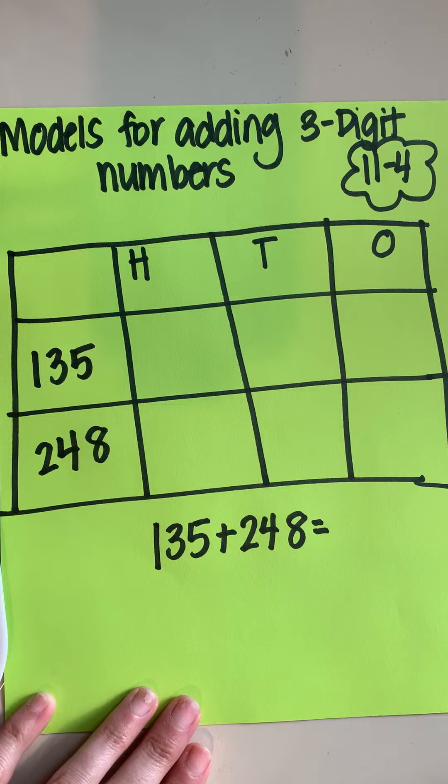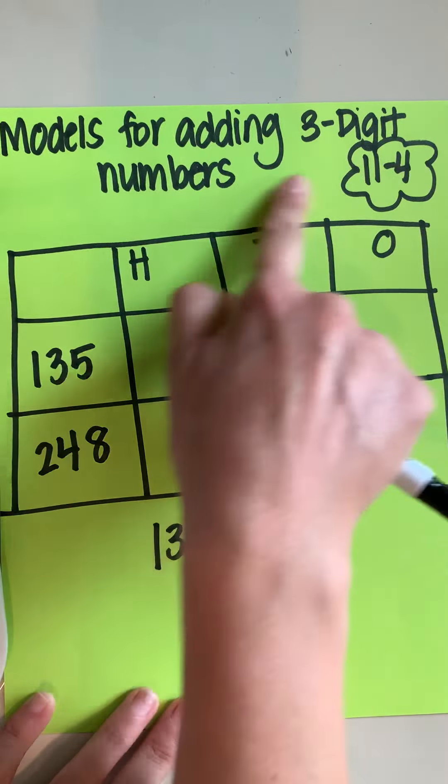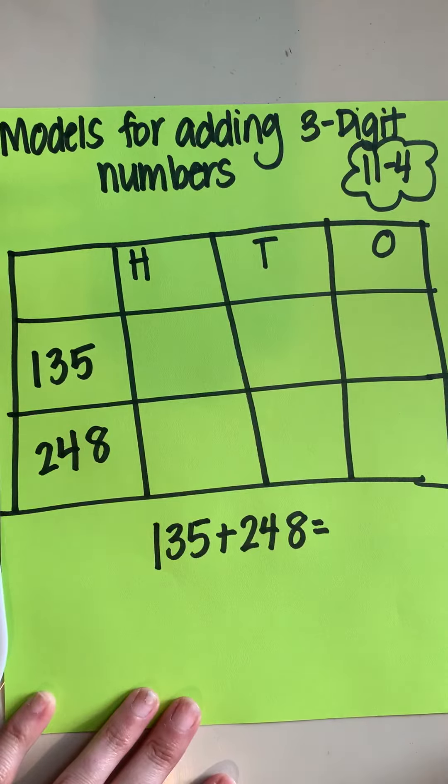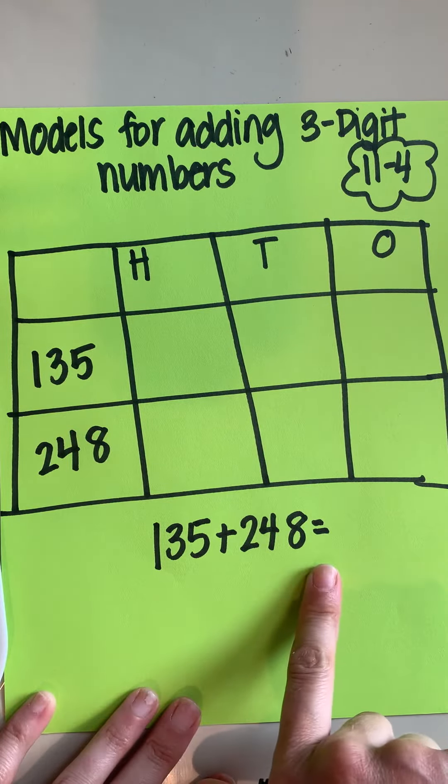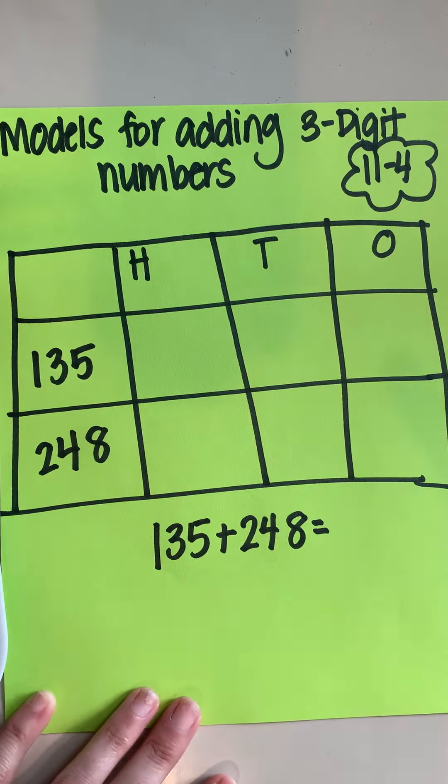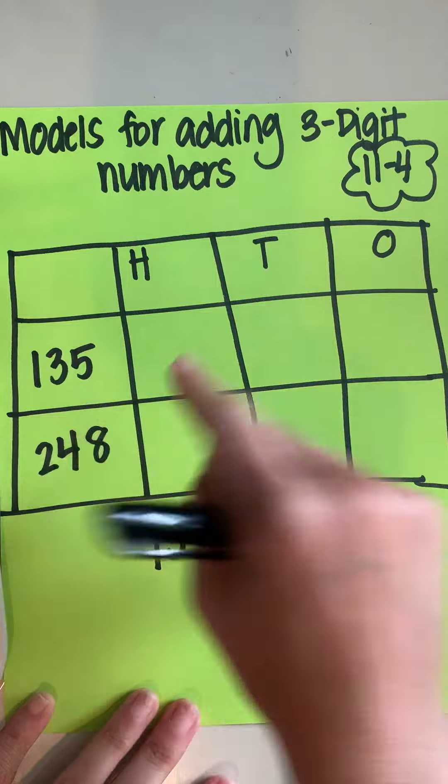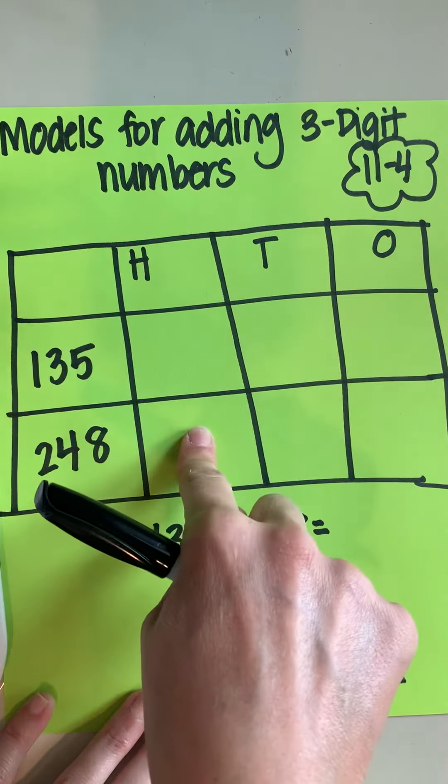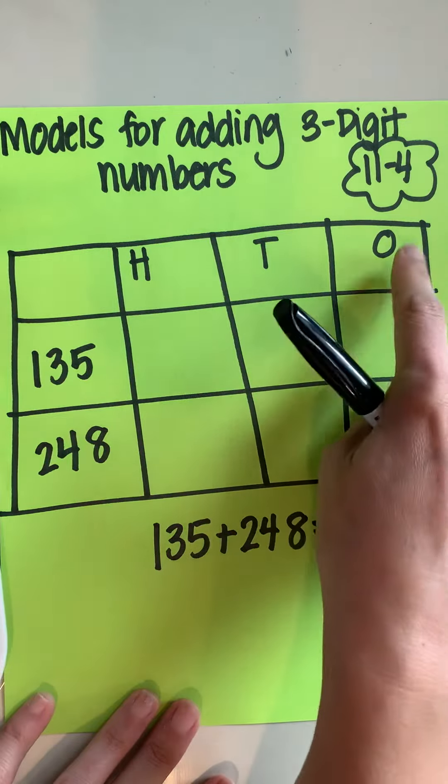Today we're going to be on 11-4 and the topic that we're going to be reviewing is models for adding three-digit numbers. All right, so when we're adding numbers like 135 plus 248, one way to do it is to be making drawings. So for my 135, this is a hundreds column, this is the tens column, and then this is the ones column.